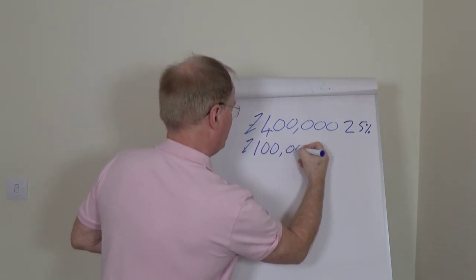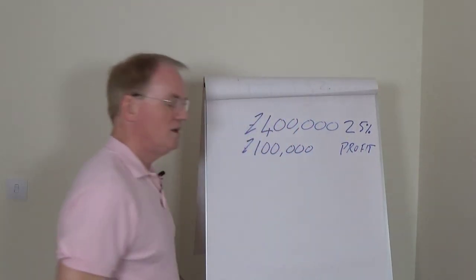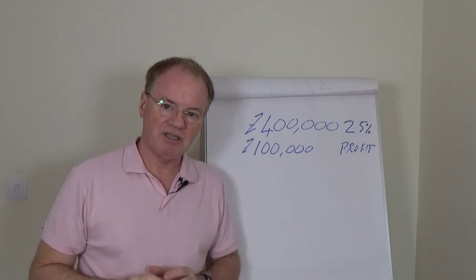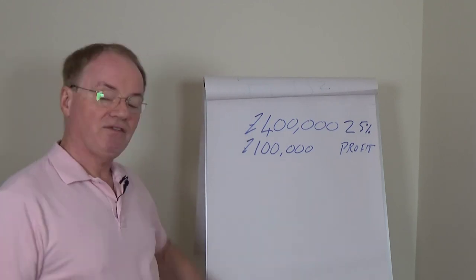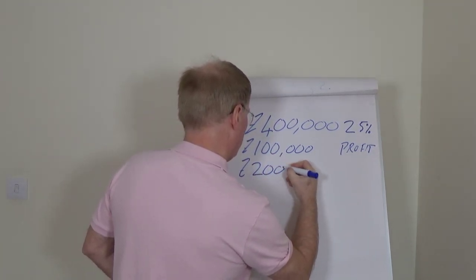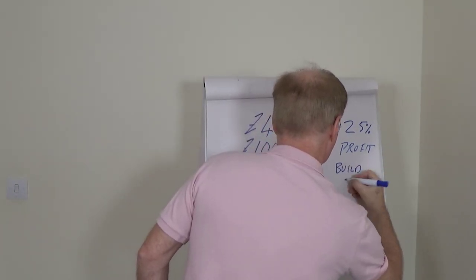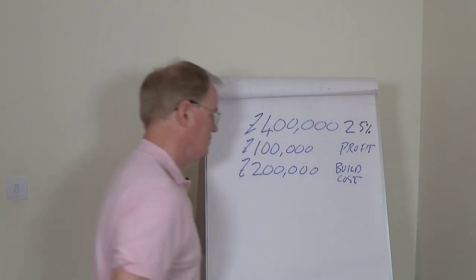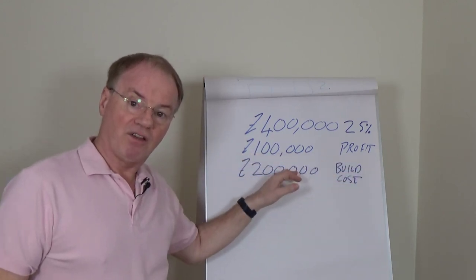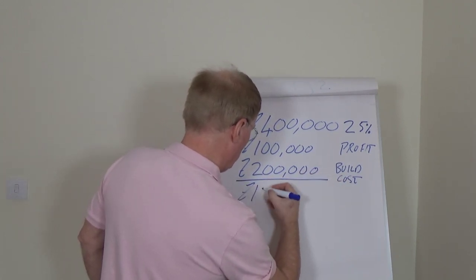So to actually build the house we're going to say that you are going to make a profit of $100,000. And now we come to the actual build cost. We won't get into the semantics of how you determine what the build cost is, but let's just say for sake of argument that this build is going to cost us $200,000.